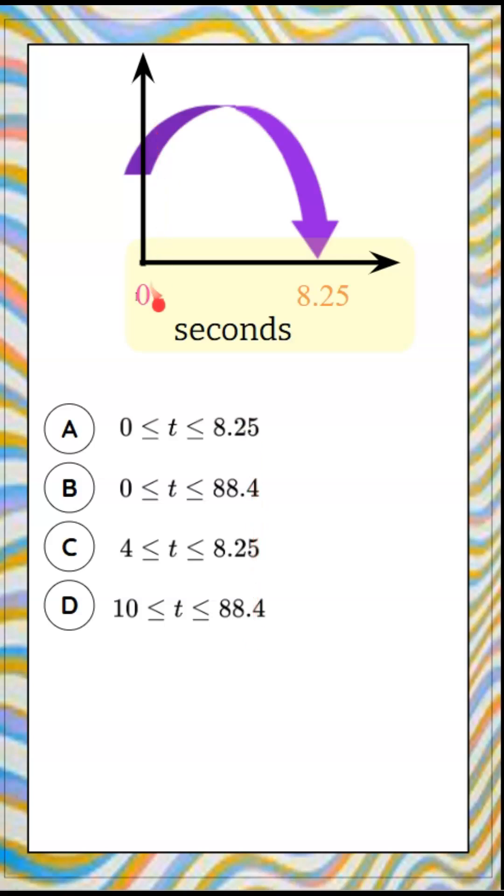So our x-axis starts at 0. The object lands on the ground at 8.25. We know that T is representing our time in seconds. T has to be greater than or equal to 0. So we're going to flip the inequality sign to write a compound inequality, and less than or equal to 8.25. And we can see that that is answer choice A.